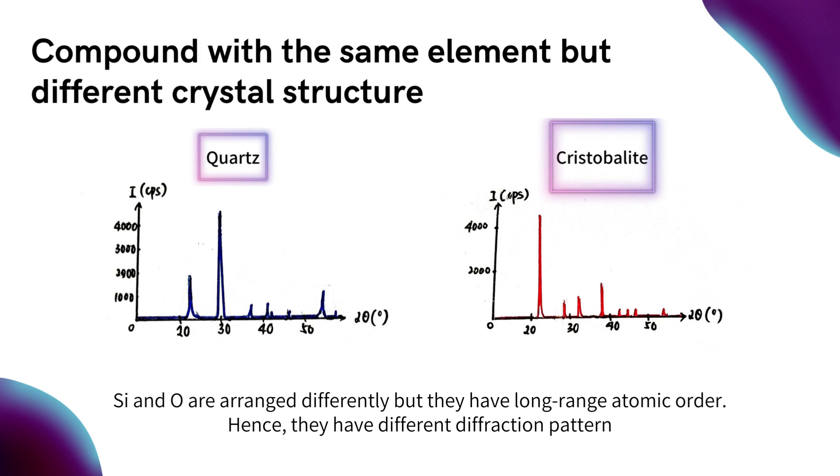For instance, we have quartz and cristobalite as an example. Quartz and cristobalite are different phases of silicon dioxide. In terms of chemical identity, they are identical, but the atoms in them are arranged differently, thus resulting in different diffraction patterns.